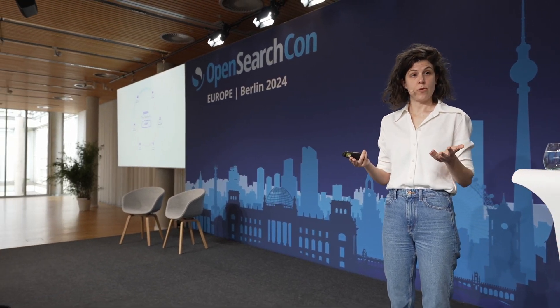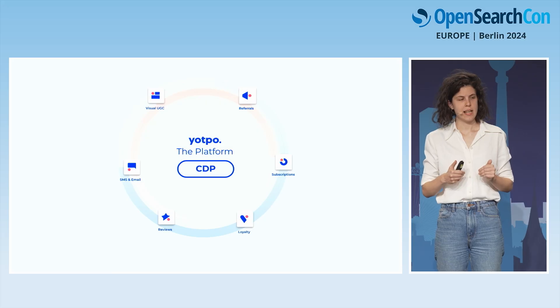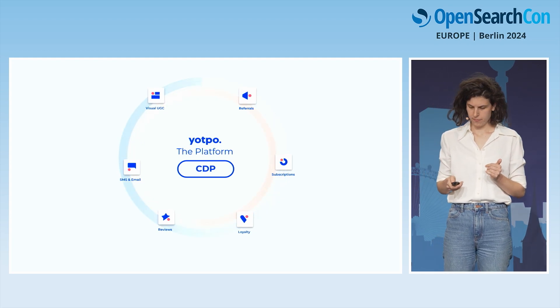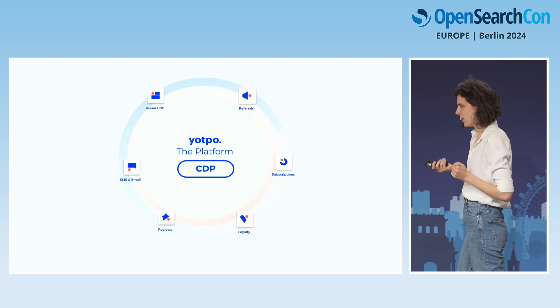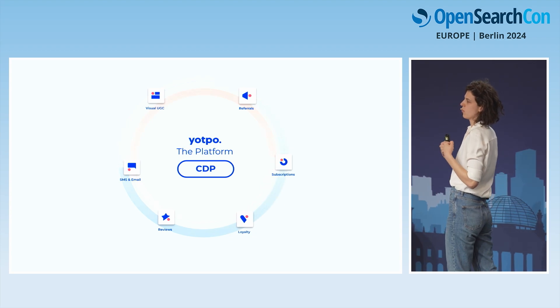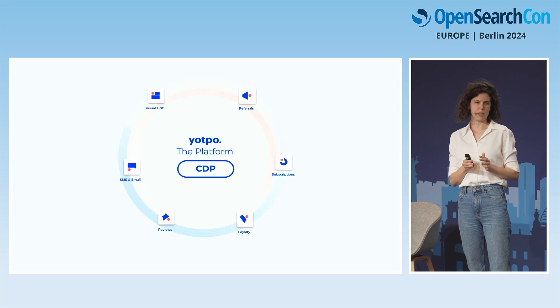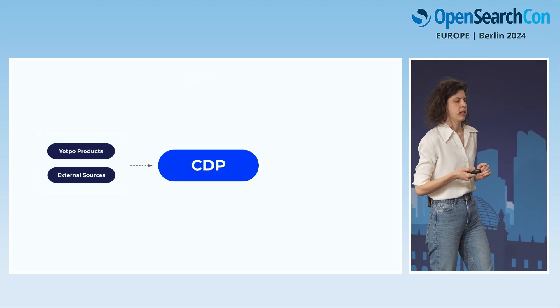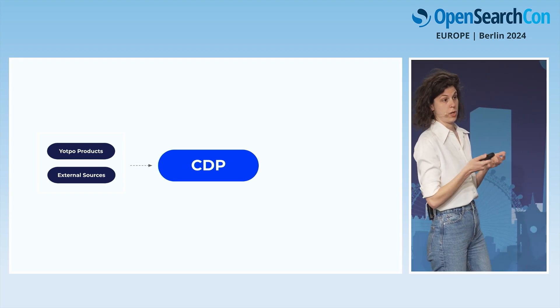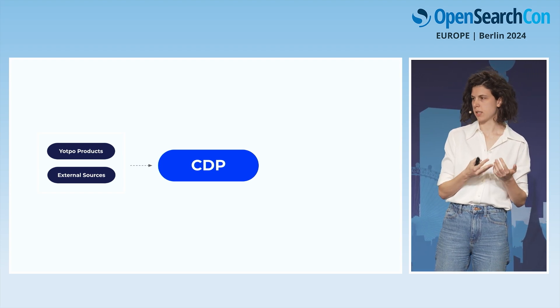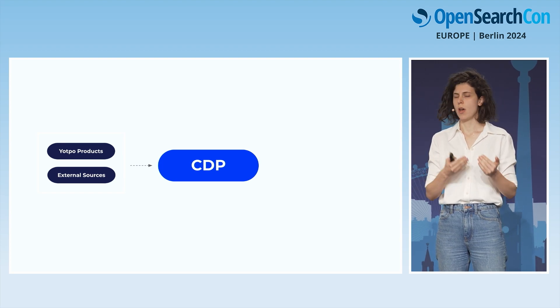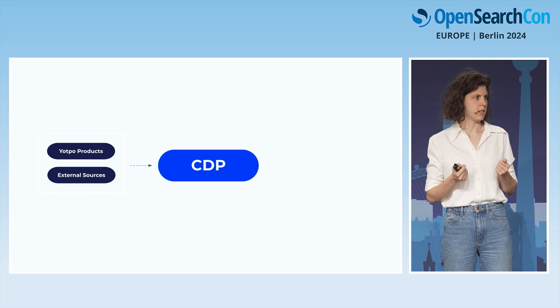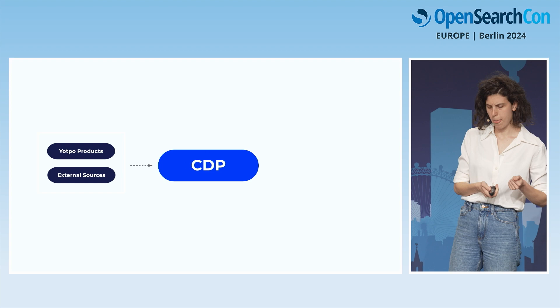One of the ways to provide synergies is using a system called CDP — Customer Data Platform. CDP receives data from multiple sources: the products of Yotpo mentioned earlier, and external sources such as third-party integrations or other e-commerce platforms that insert e-commerce entities like orders or checkouts. It analyzes the data and creates an entity called a shopper profile entity.